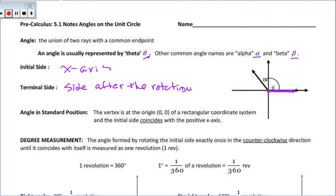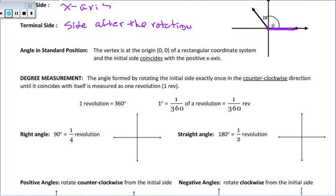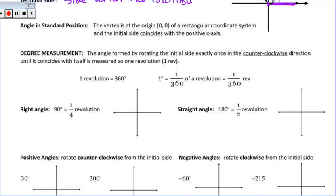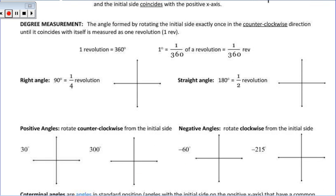We can talk about degrees — there are 360 degrees in a circle. So if I wanted to have a 90-degree angle, we would start on the initial side, rotate 90 degrees, and the angle would land right there. That's a quarter of a revolution.